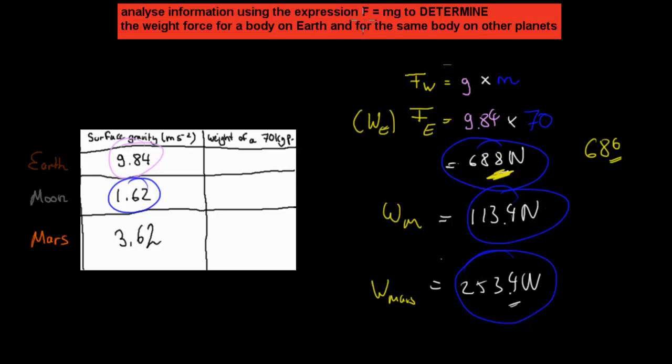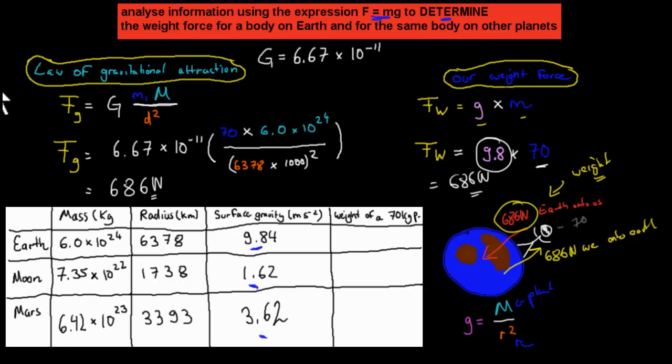But the dot point just says analyze information using the expression force equals mass times gravity to determine the weight force for a body on Earth and for that same mass on different planets. Basically what you're going to be asked to do is you're going to have this data, you might have the gravity or you might have the mass of that person, and you should be calculating the actual weight. Or you could be given the weight and the mass and you're meant to calculate the gravity. But basically you need to know how to use the formula: weight equals mass times gravity. And also you need to be able to know how to figure out gravity itself, using this equation. But those are the two main equations we've covered so far that you need to know. Hopefully that was useful.